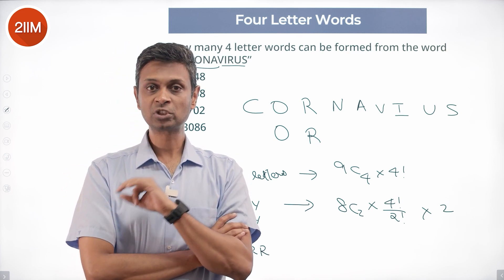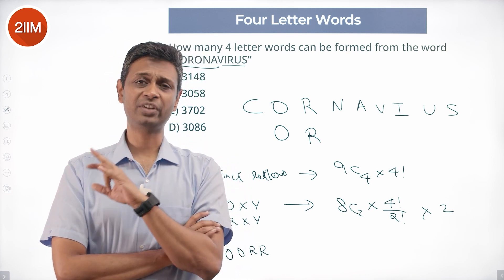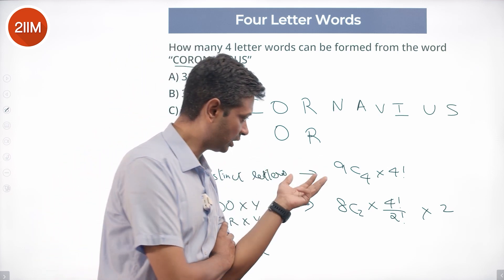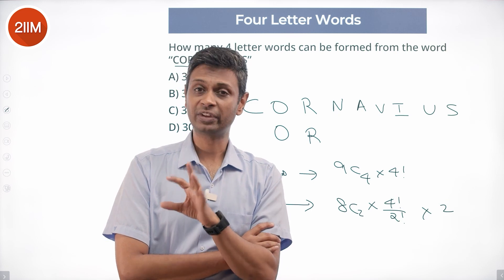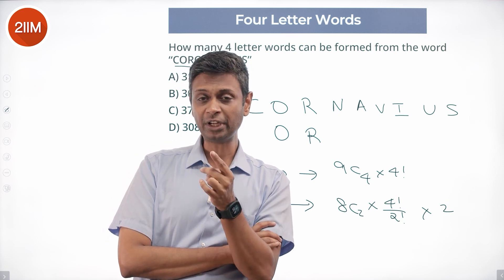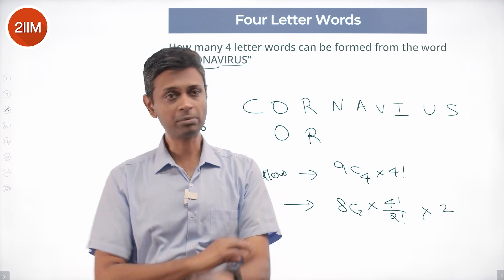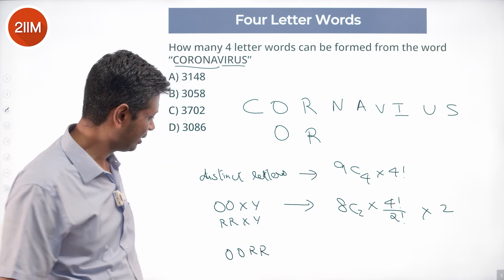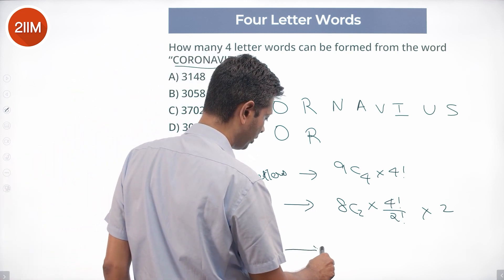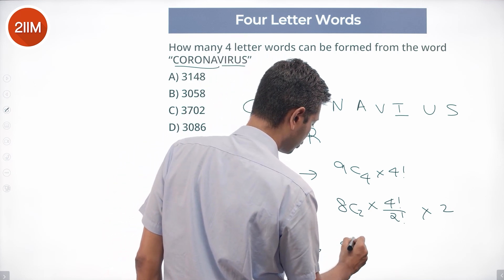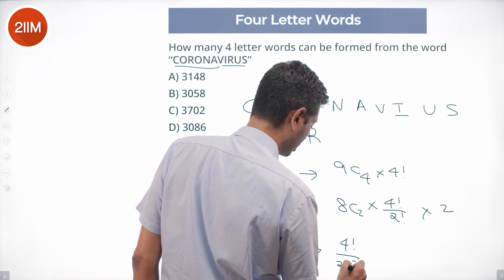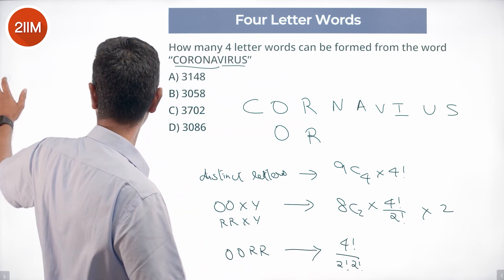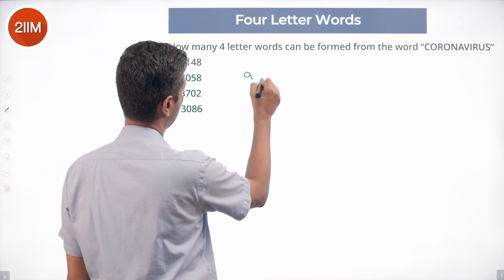Both O, O, X, Y and R, R, X, Y follow the same logic. Since the repeating letter can be O or R, we multiply by 2: that gives 8C2 × (4!/2!) × 2. Finally, for O, O, R, R, the number of arrangements is 4! / (2! × 2!).